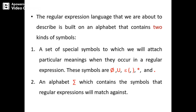What are the special symbols you can use? There are two kinds: one set of special symbols to which we attach particular meanings, like null, union, epsilon, open bracket, close bracket, star, and many more. The other is the alphabet, which contains the symbols that regular expressions will match against.